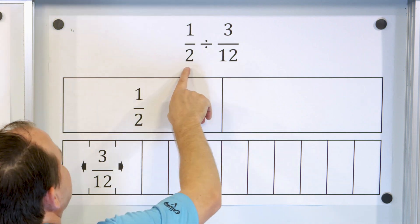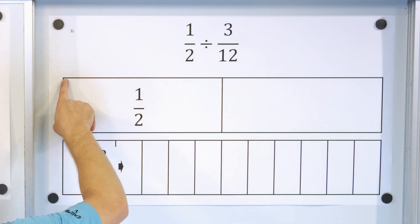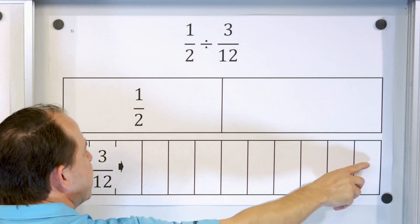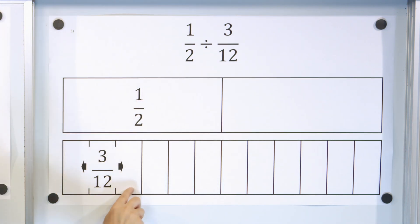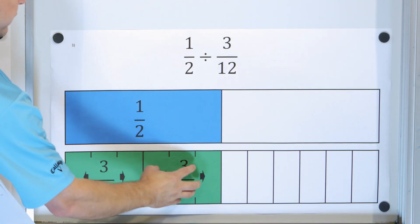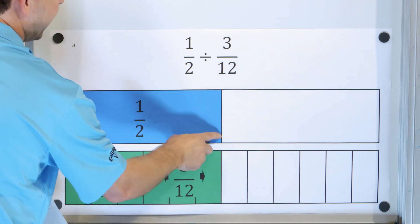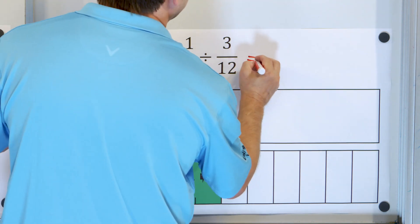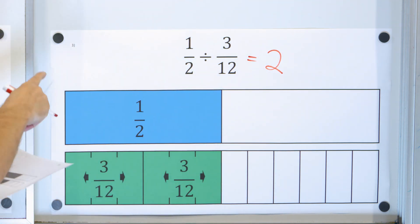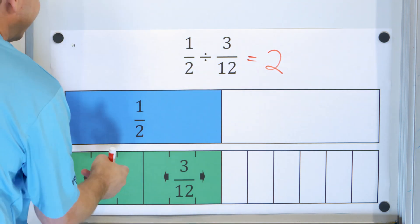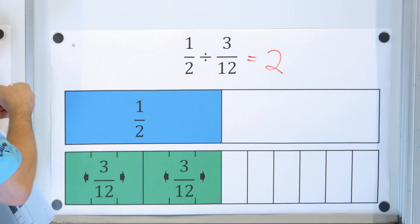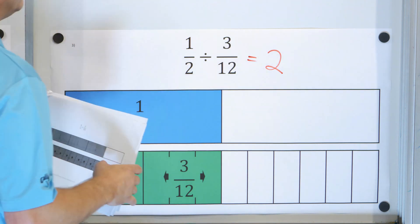Next problem: one-half divided by three-twelfths. One-half is when you cut the thing into two pieces and take one, and three-twelfths is when you cut it into twelve pieces and take three. The three-twelfths will go one whole time, two whole times — you can see the boundaries line up exactly, so it goes two whole times. But if I were to change the one-half into one-seventh or one-eleventh or one-thirteenth, this would not fit a whole number of times; we'd have a fractional answer.